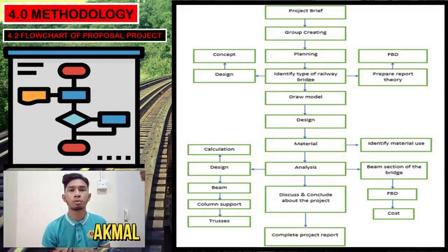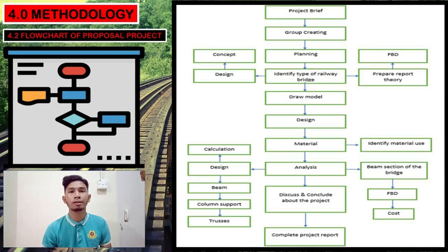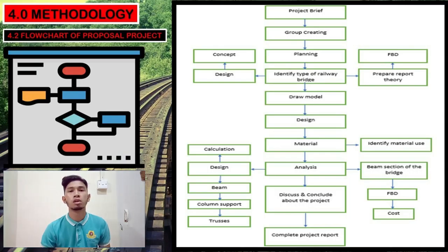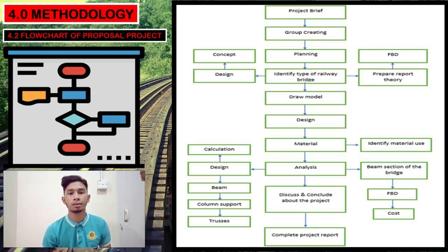For section 4.2, Flowchart of Proposal Project. This flowchart shows the journey of the railway bridge project from start to finish. Beginning from a briefing given by the subject lecturer Dr. Wan Hamiza, followed by group formation, planning, and identifying the type of railway bridge. Key elements identified include determining the free body diagram and bridge design concept. Then, drawing the bridge model and designing the bridge, identifying material use. In the analysis phase, several structures were analyzed: design, beam, column, trusses, and cost analysis. Finally, discuss and conclude about the project, and complete the project report.